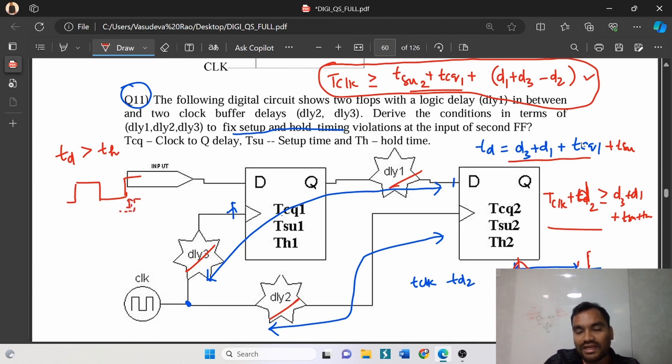Similar, same equation. Here the delay is d3 plus Tclock-to-Q delay of flop 1 plus d1. This is the time taken for the data to reach this point. This should be always greater than your clock path. So how much time is it taking exactly?